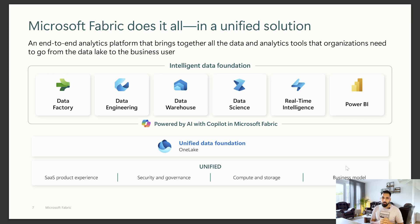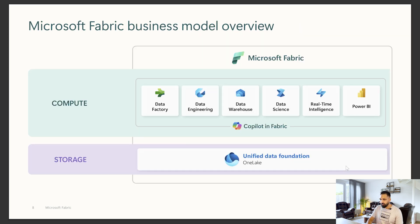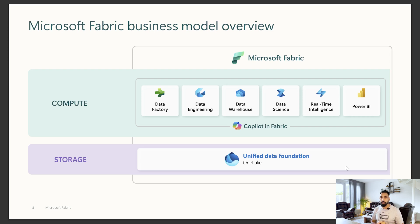There are different experiences in Microsoft Fabric: Data Factory, which helps you ingest, copy, and transform data; Data Engineering; Data Warehousing; Data Science; Real-Time Intelligence; and Power BI. There's also one more experience for creating alerts. The Microsoft Fabric business model overview has three major parts: first, the storage solution — OneLake — which caters to all data sources at one single point. On top of that are the different experiences we just discovered. And every one of these experiences is surrounded by Microsoft Fabric Copilot.